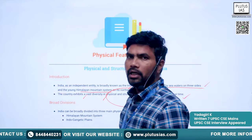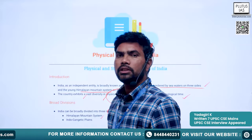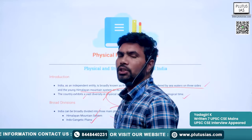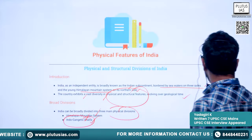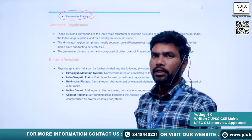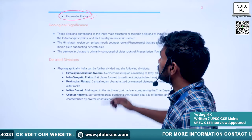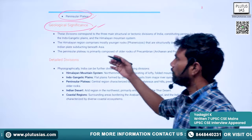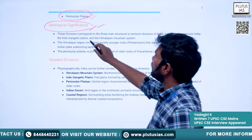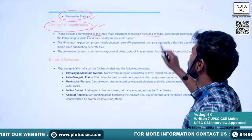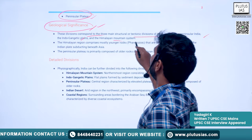Broadly, India can be divided into three main physical divisions: the Himalayan Mountain System (also called the Great Himalayas), the Indo-Gangetic Plains — one of the largest plain systems in India — and the Peninsular Plateau. These three broad divisions also correspond to the three main structural or tectonic divisions of India, constituting peninsular India, Indo-Gangetic Plains, and the Himalayan Mountain System.